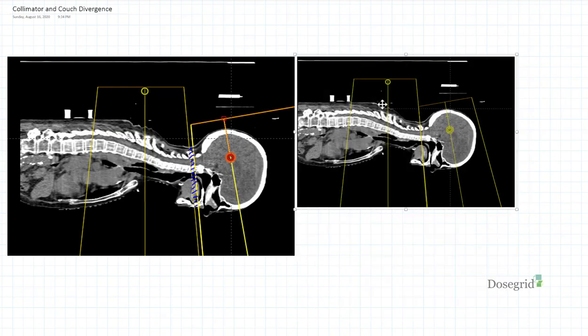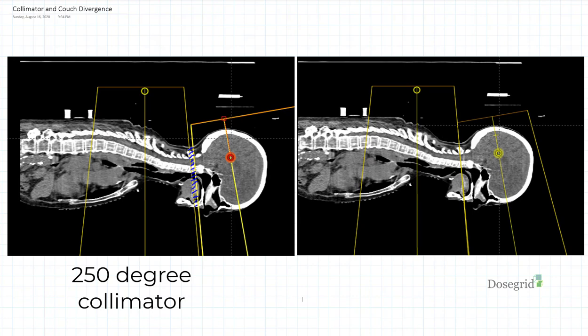Alternatively, if the collimator is set improperly to say 250 degrees, the region between the brain and spine fields is underdosed.